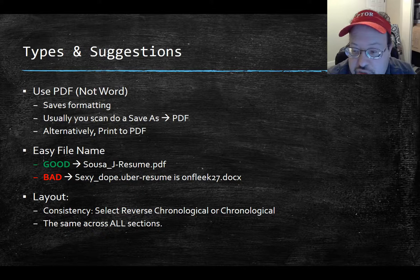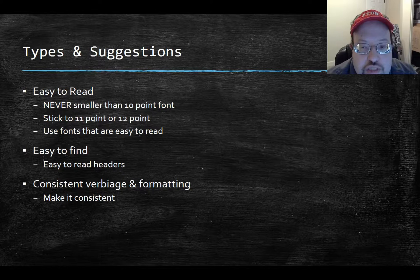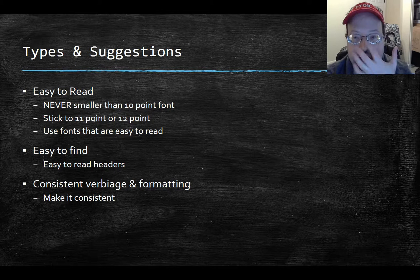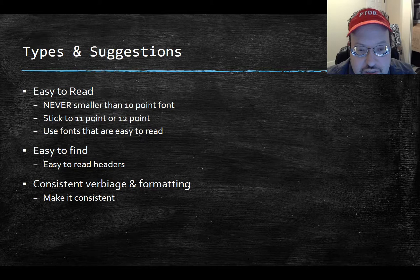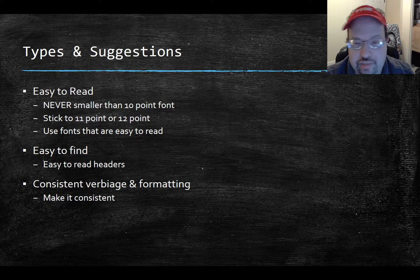Layout consistency — I already talked about reverse chronological or chronological. I prefer reverse chronological, but what I'm really checking for, especially in 140, is consistency across all sections. Never go smaller than 10-point font. In general, people who read resumes are older and have trouble with vision, so stick to 11, ideally 12-point font. Pick fonts that are easy to read. You can use a more classic or different font for your name, but headers and body should be easy to read and consistent. Inconsistent headers make it look like you couldn't figure out how to fix them.